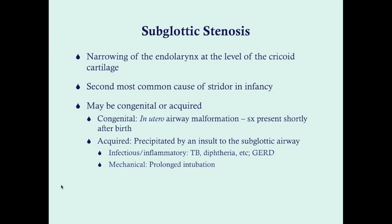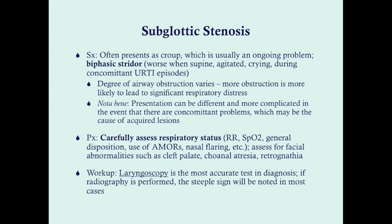It can also be caused by infectious or inflammatory causes, though these are less common in the U.S. — things like tuberculosis or diphtheria. It can also be caused by GERD with chronic aspiration. This typically presents as croup, which makes sense because croup affects the same area. Patients may present frequently with stridor resembling typical croup or spasmodic croup, where they don't have a fever but have chronic croup-like symptoms.